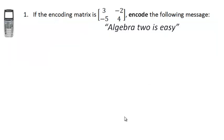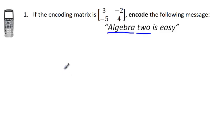Let's do an example using the phrase 'Algebra 2 is easy.' Just as a heads up, this is too long for our practice, so we're just going to take the first two words — 'Algebra 2' — and encode them with this matrix. First, you must figure out what the numbers are for each of those letters.